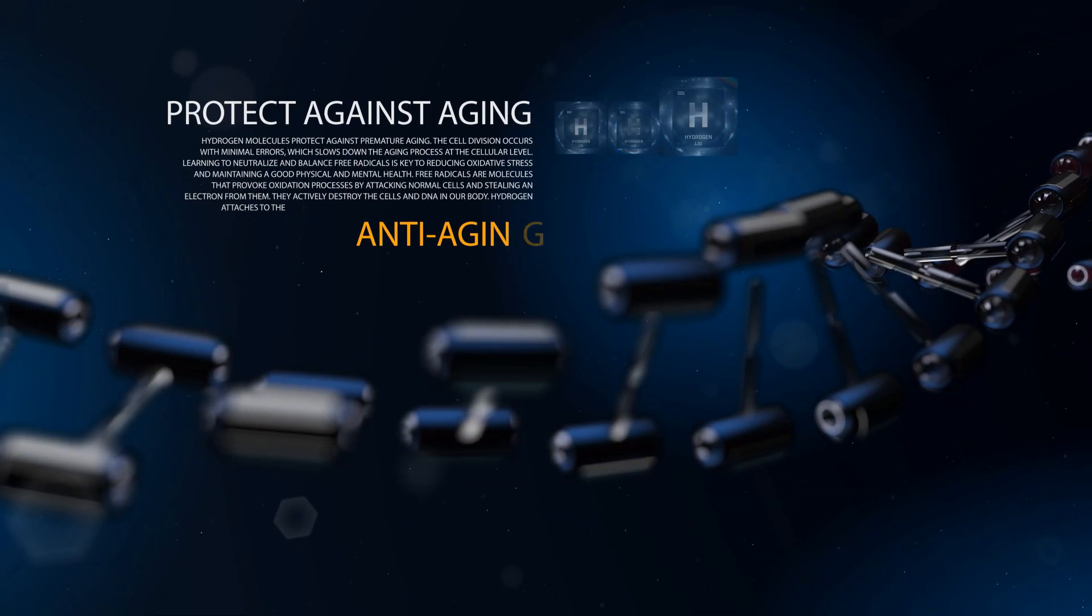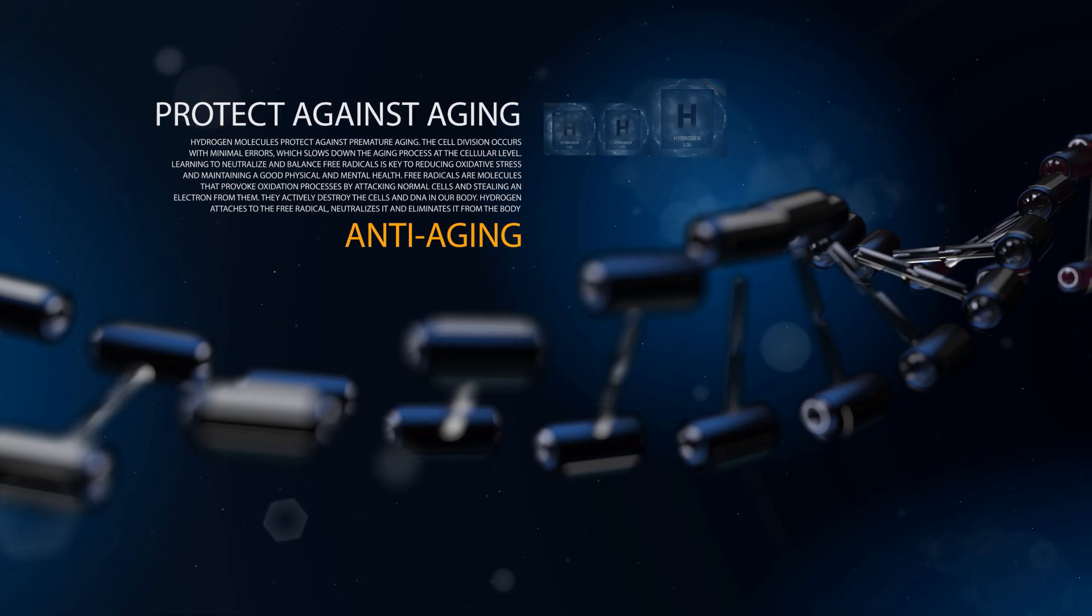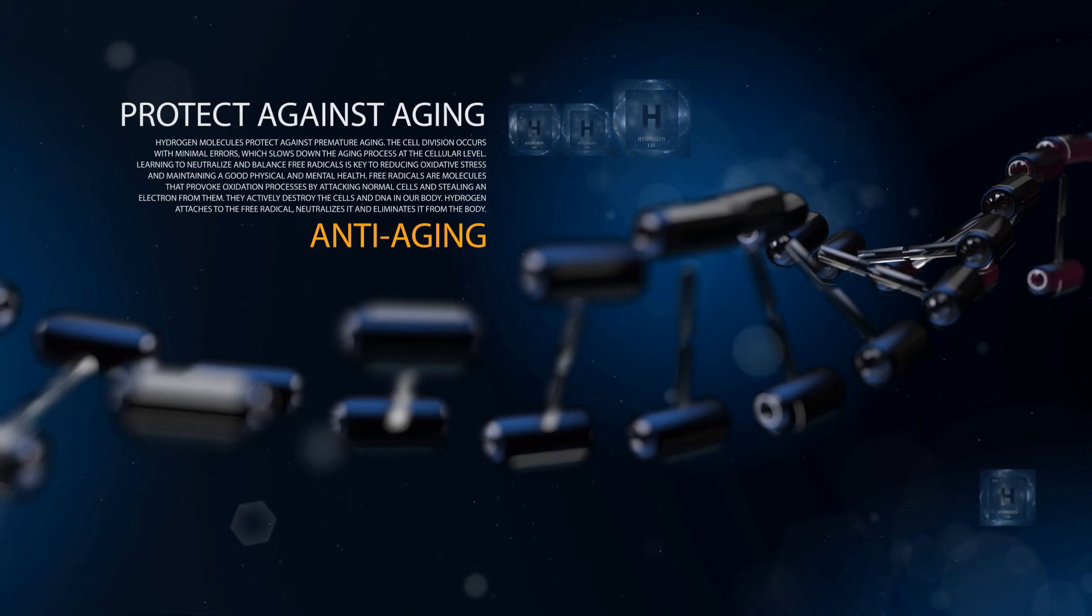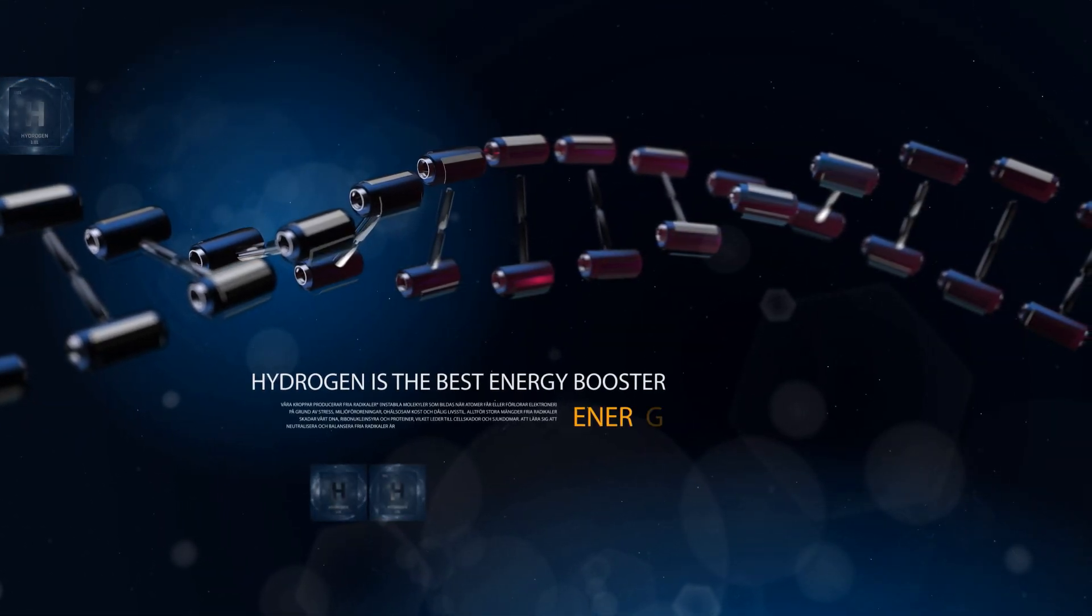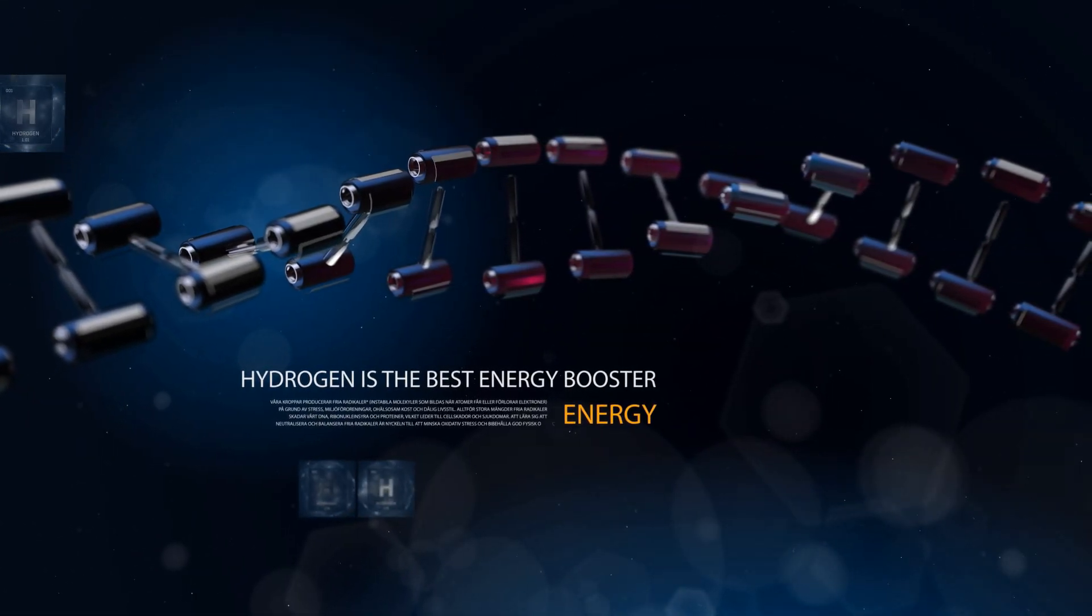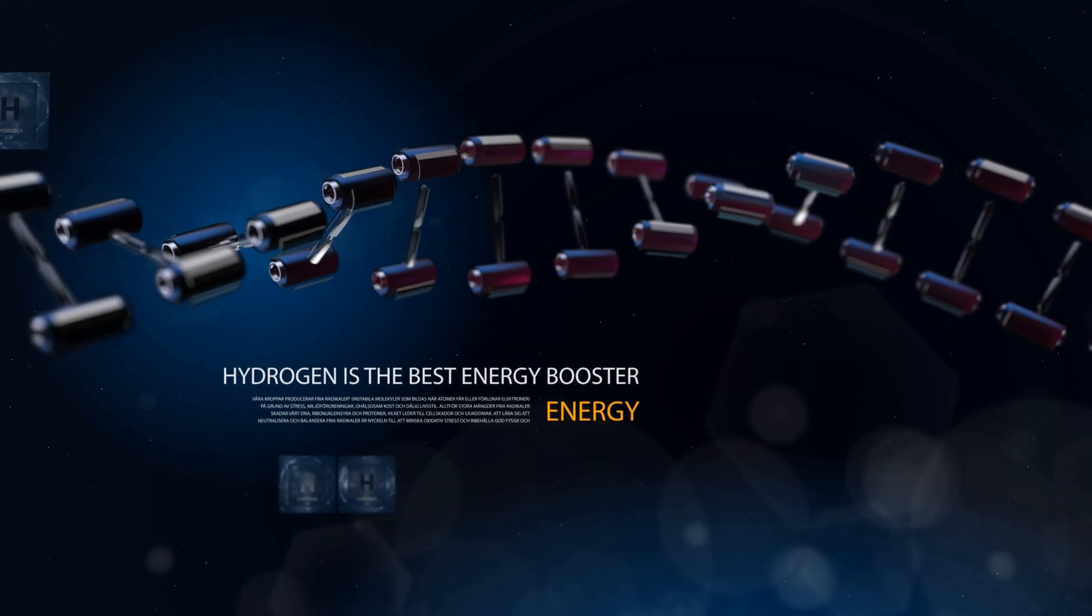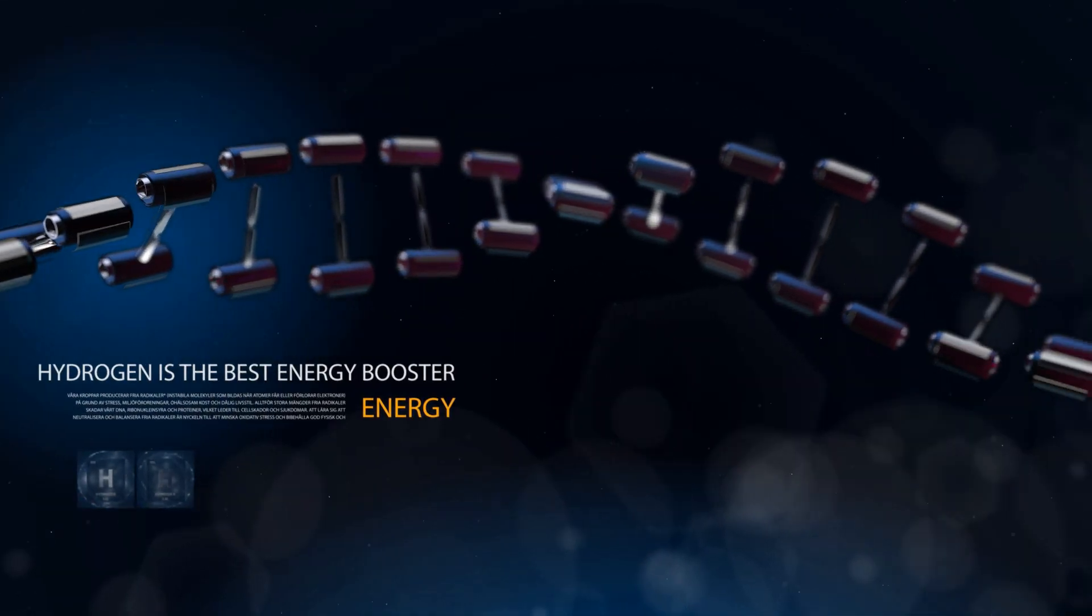Hydrogen molecules protect against premature aging. The cell division occurs with minimal errors, which slows down the aging process at the cellular level. Hydrogen is the best energy booster. Energy resources are increasing because they do not have to fight oxidative stress.